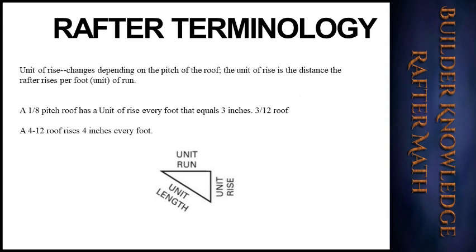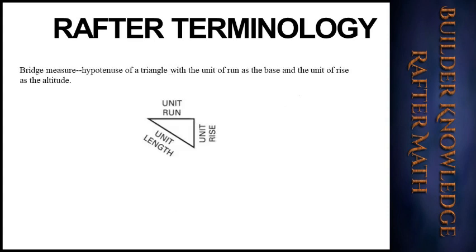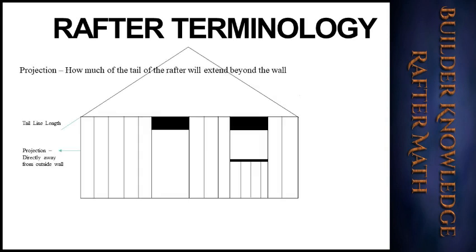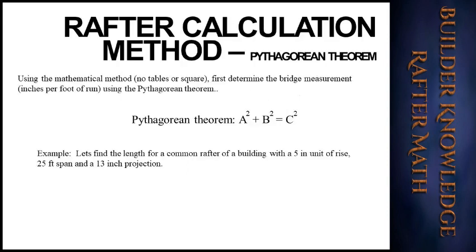The bridge measure or bridge measurement is the hypotenuse of a triangle with the unit of run as the base and the unit of rise as the altitude. We obtain this using the Pythagorean theorem: a² + b² = c². The projection is the amount of the rafter tail that extends beyond the wall — a horizontal measurement directly from the wall to the end of the tail or to the end of the fascia.